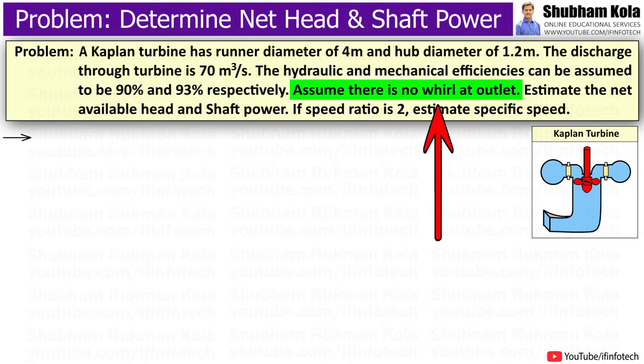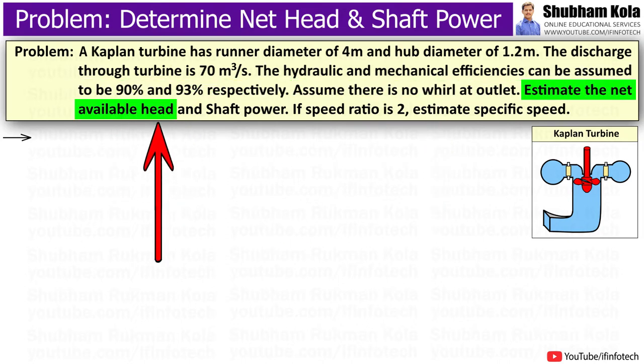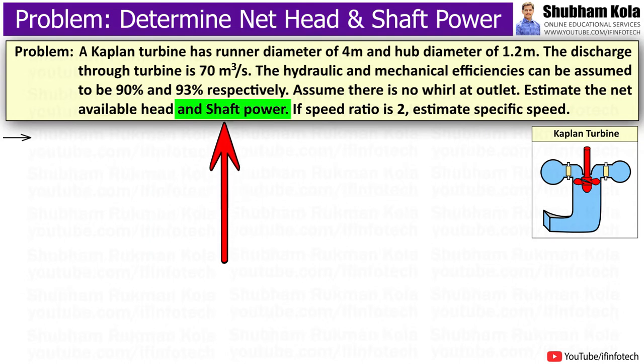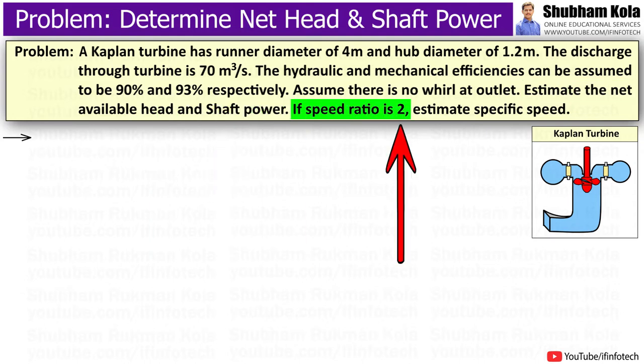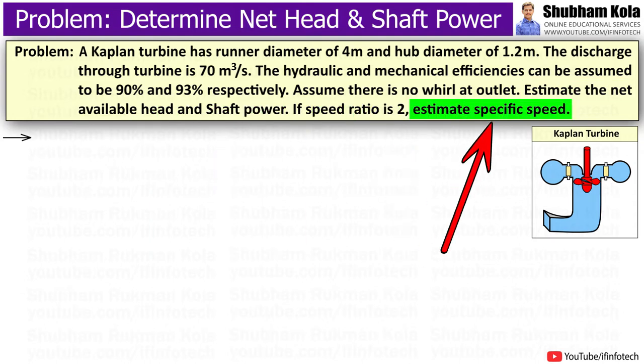Assume there is no whirl at outlet. Estimate the net available head and shaft power. If the speed ratio is 2, estimate the specific speed.